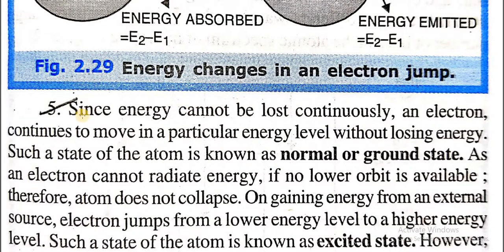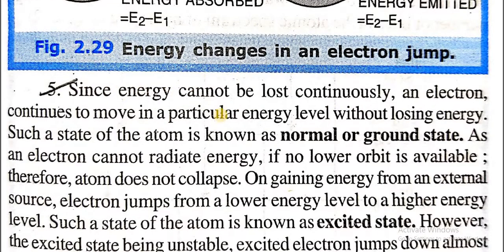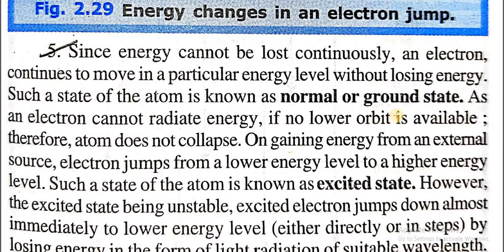The fifth postulate: since energy cannot be lost continuously, an electron continues to move in a particular energy level. There is no loss of energy, and the electron continues to move in a particular energy level without losing energy. Such a state of the atom is known as the normal or ground state. As an electron cannot radiate energy if no lower orbit is available, the atom does not collapse.